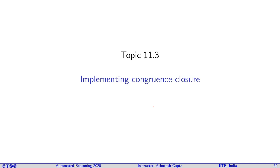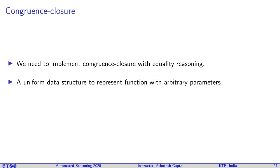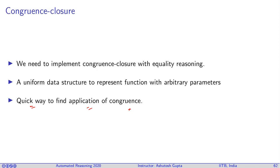We will discuss how to implement congruence closure with the self-reliant class. We need to implement congruence closure with equality reasoning. First, we need a uniform data structure to represent functions with arbitrary parameters so that we can implement a congruence closure efficiently. We also need a quick way to find where to apply the congruence closure.